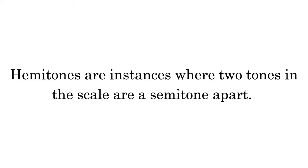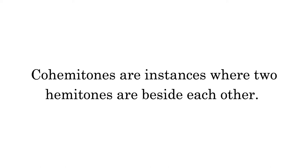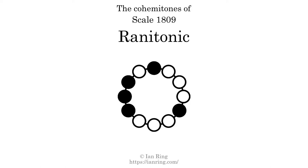Hammertones are instances where 2 tones in the scale are a semitone apart. This scale has 2 hammertones. Co-hematones are instances where 2 hammertones are beside each other. This scale has 1 co-hematone.